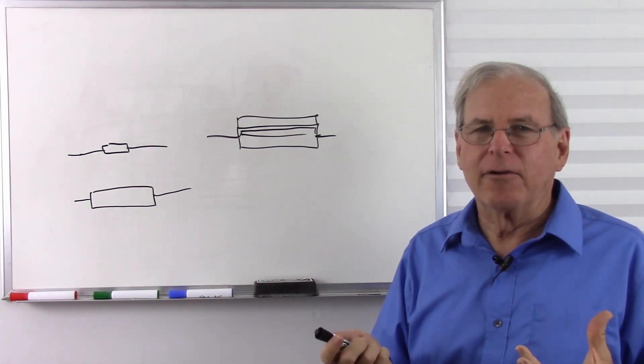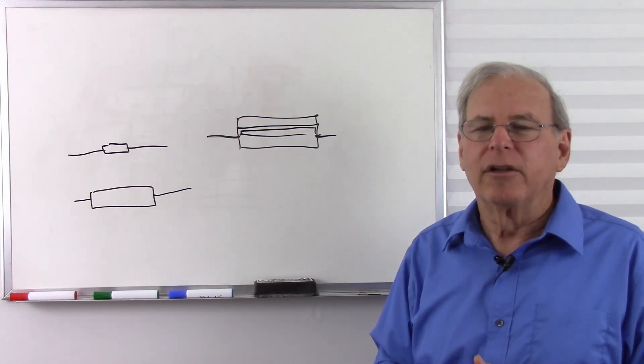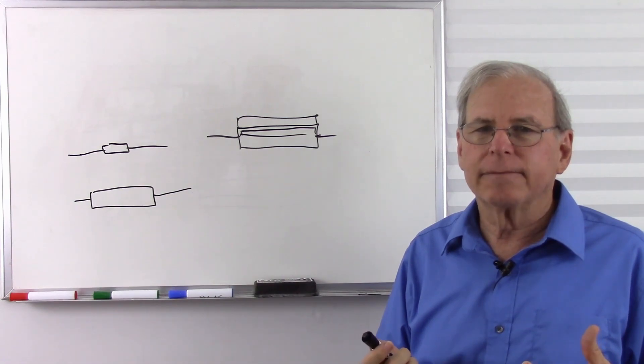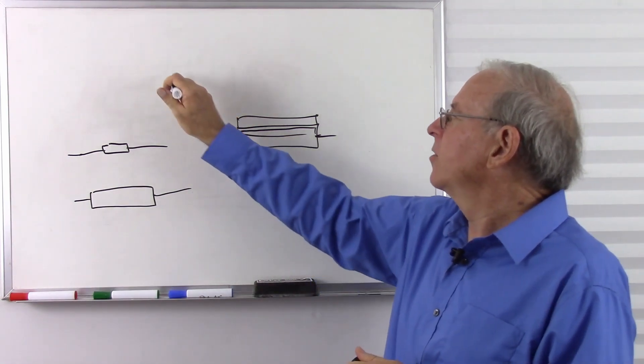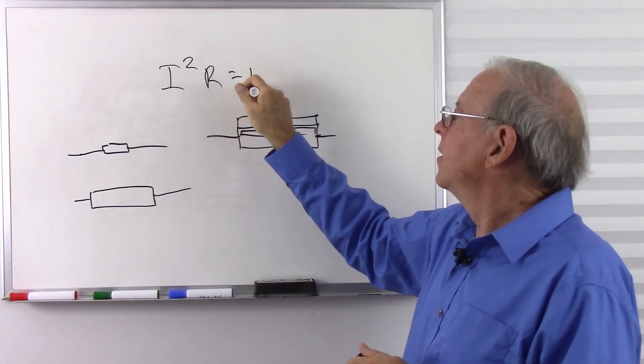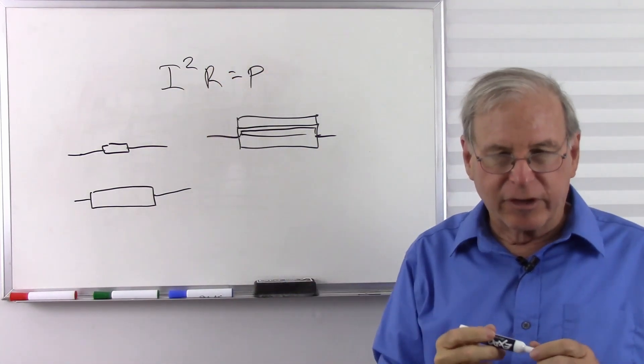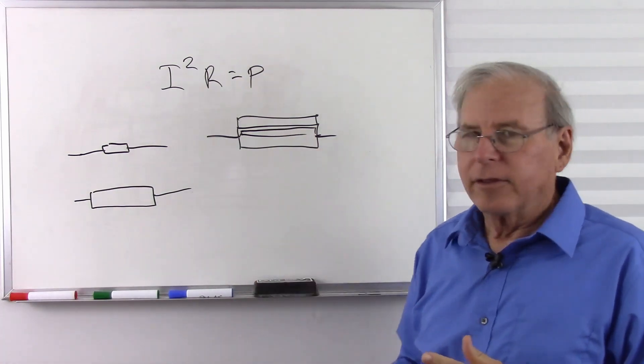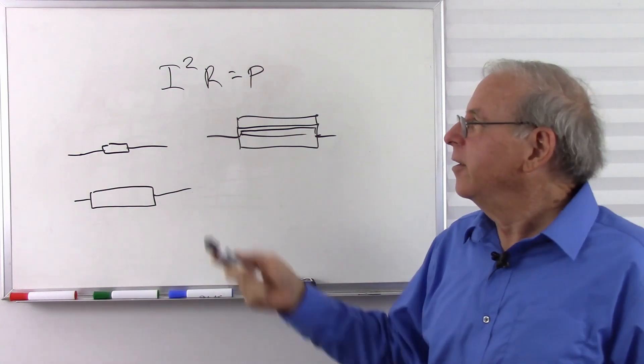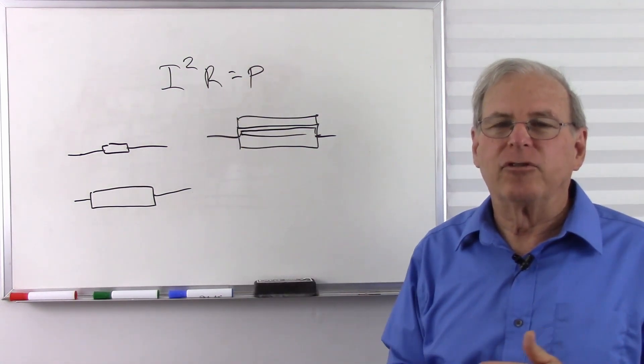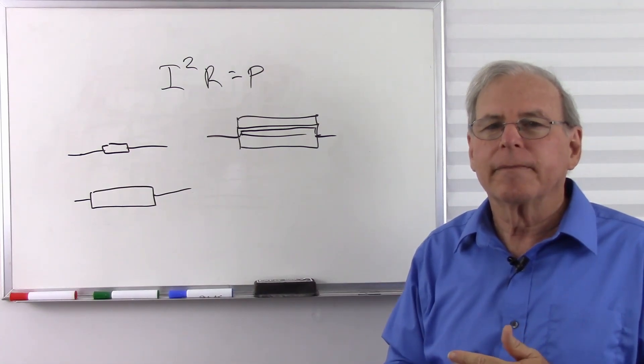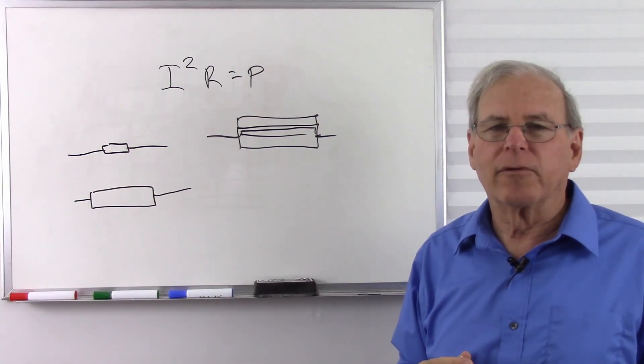But bigger resistors can handle more power than little resistors. So, resistors, whenever you have current going through resistance you're always going to get heat. The formula is your power equals your current squared times your resistance. And so the more current, you double your current you quadruple your power. So, make sure that you properly design around the right resistors you need and remember a bigger resistor dissipates more heat than a smaller resistor.